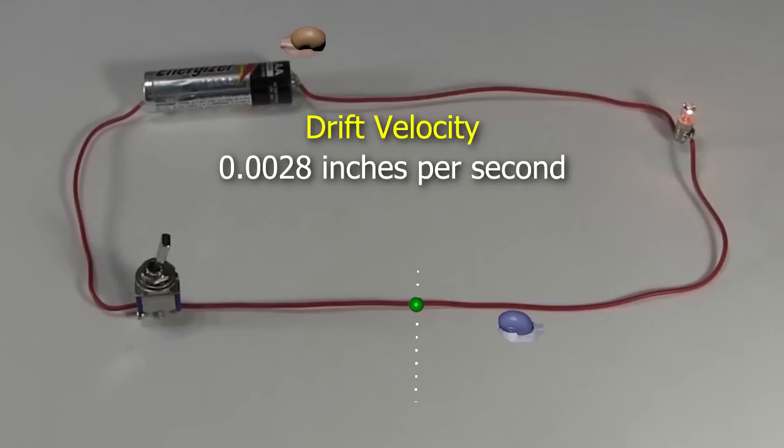For the electron to go around our 22-inch long track, it would take 7,857 seconds, or around 131 minutes, ignoring the time spent in the battery, switch, and light.